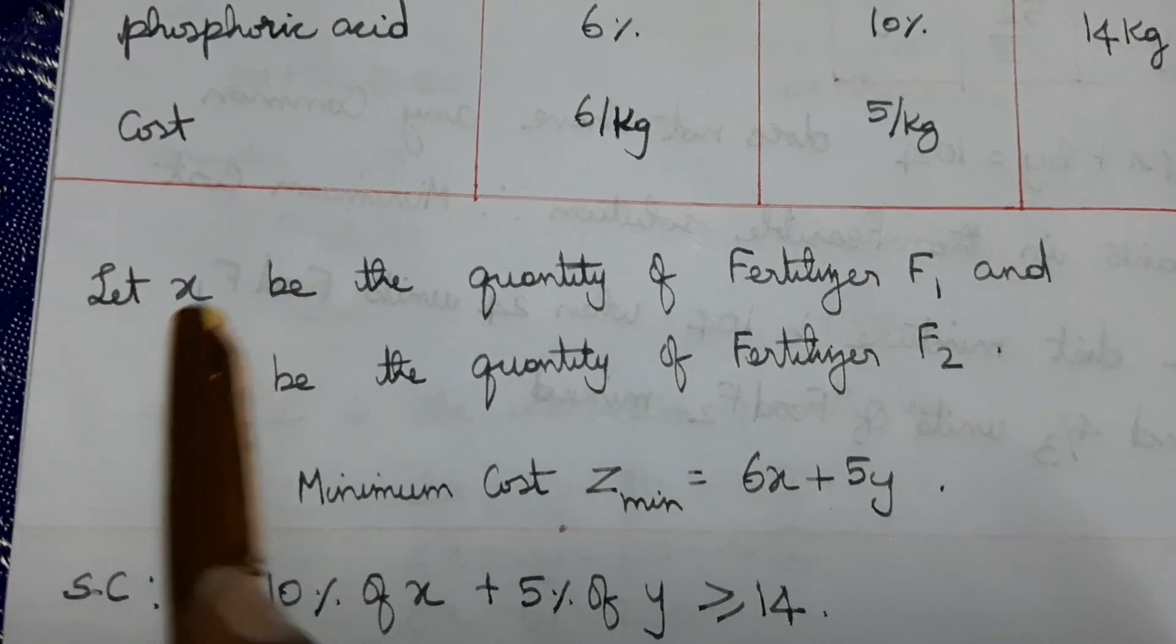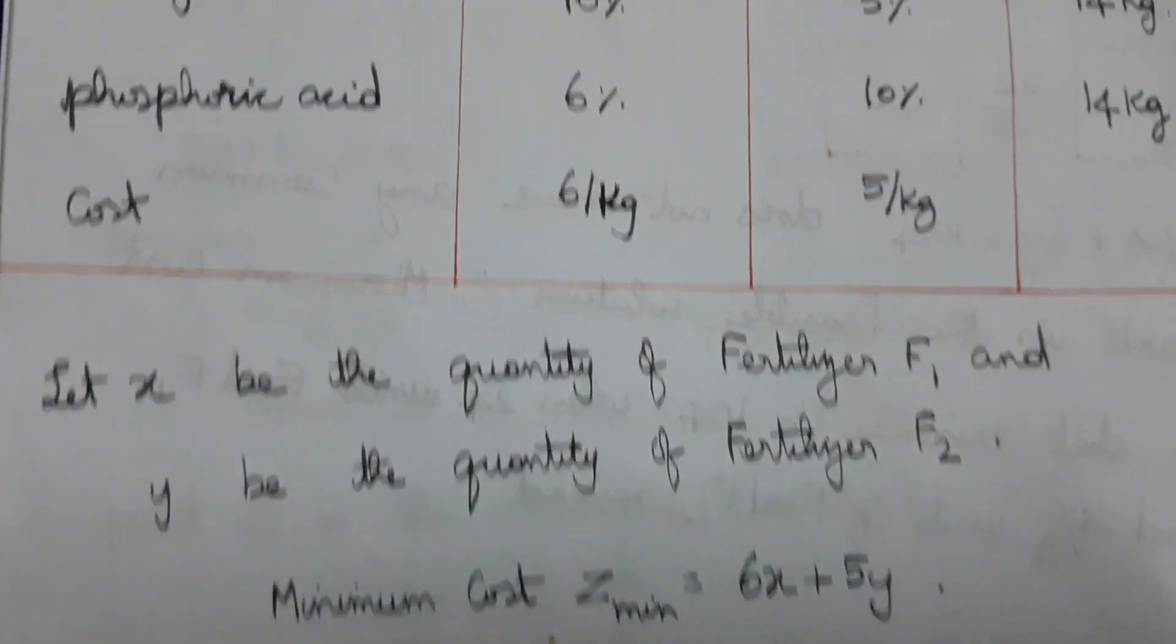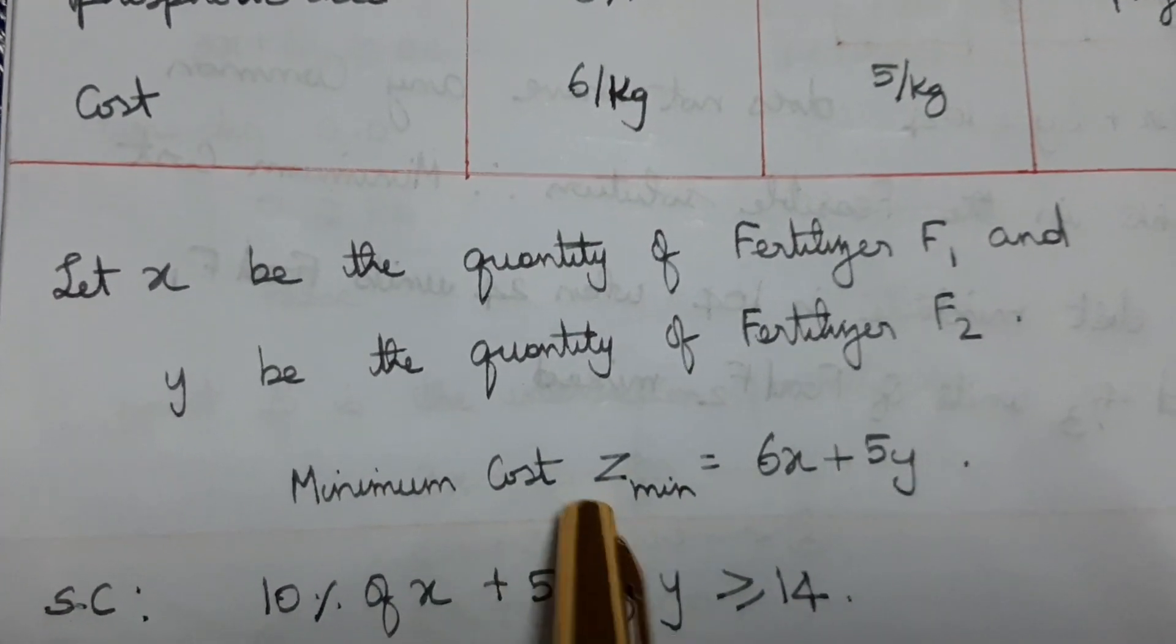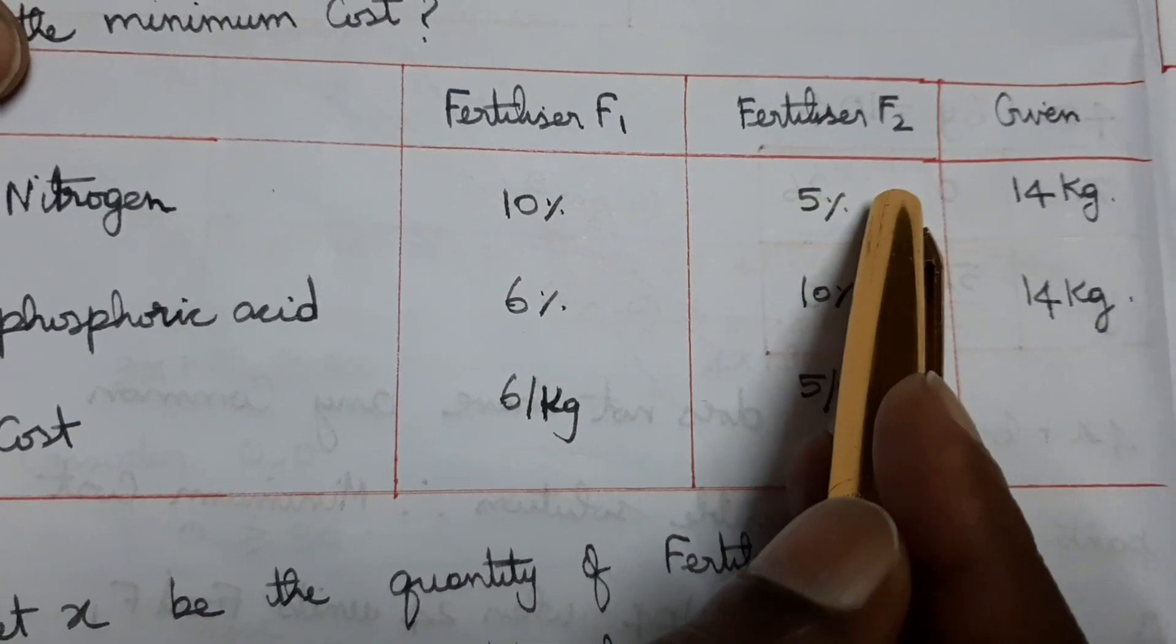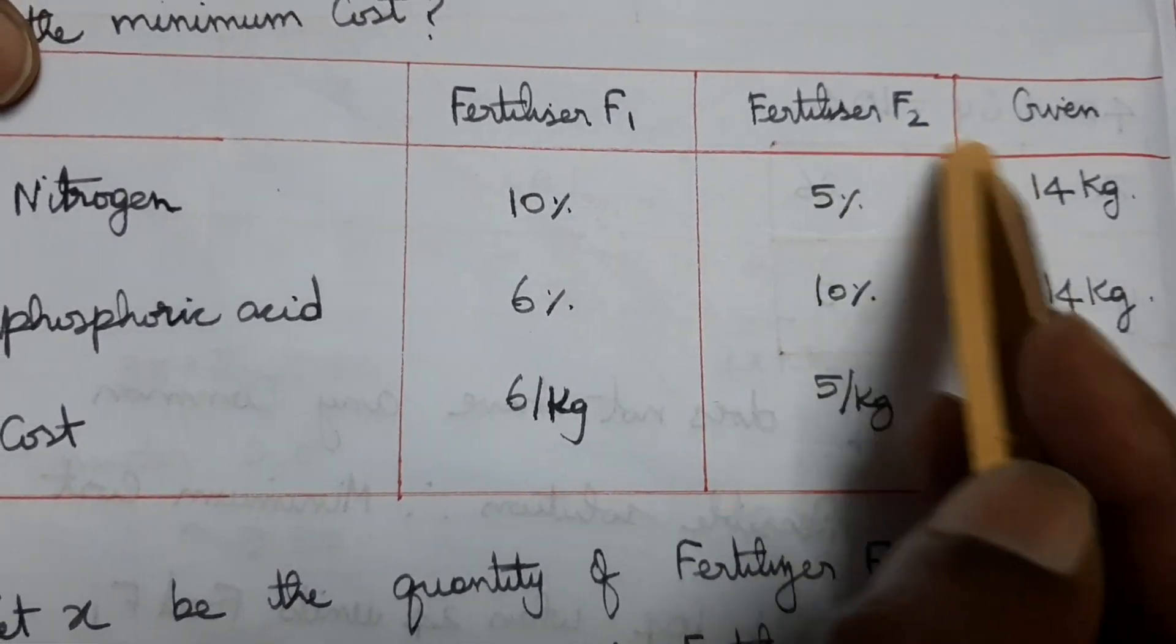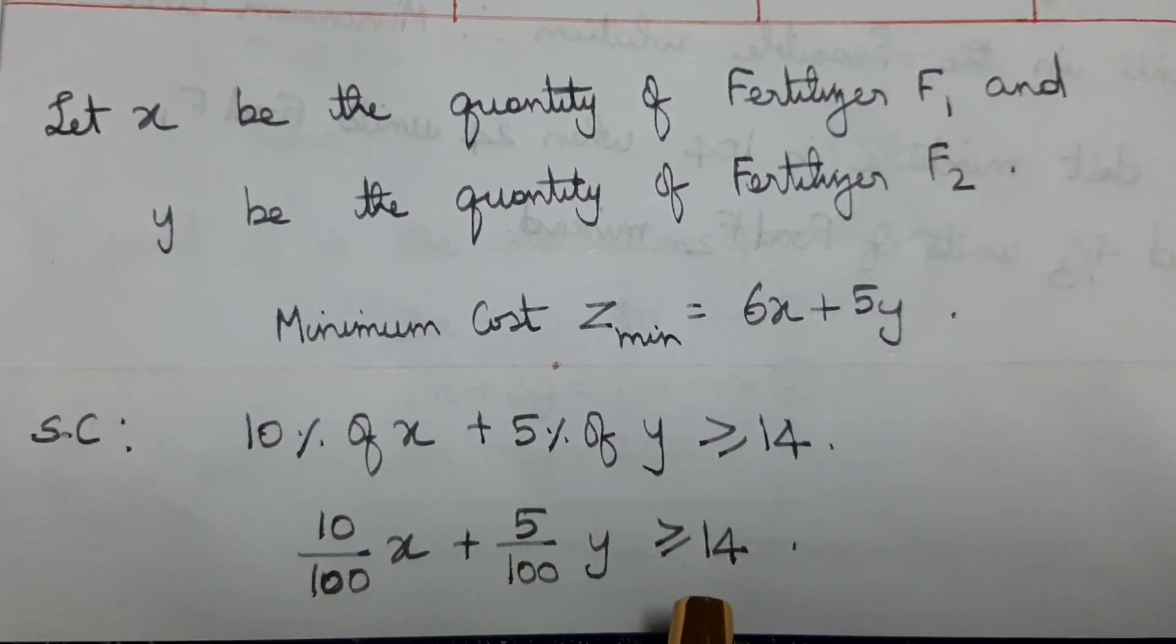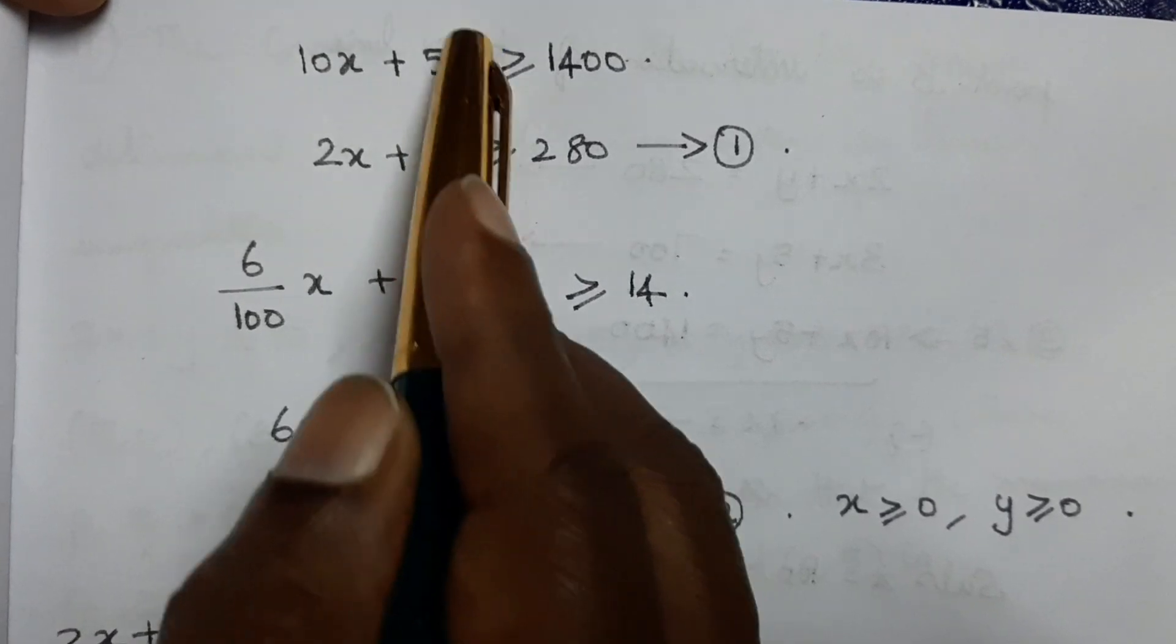Let x be the quantity of fertilizer F1 and y be the quantity of fertilizer F2. Minimum cost Z equals 6x plus 5y. For nitrogen, 10 by 100 x plus 5 by 100 y greater than or equal to 14.